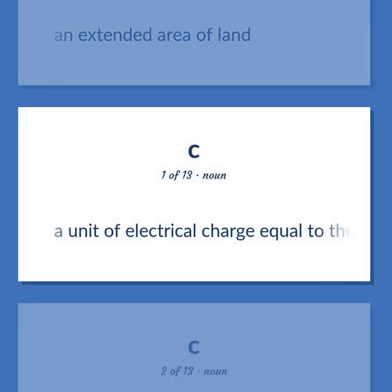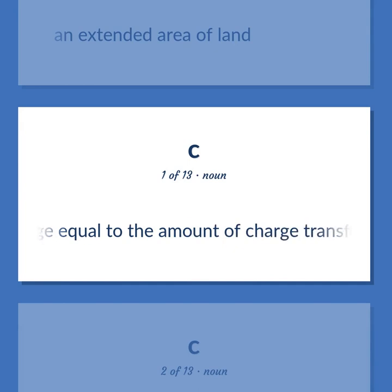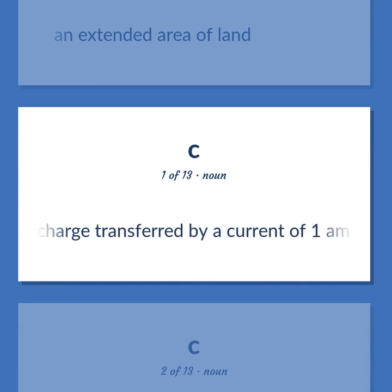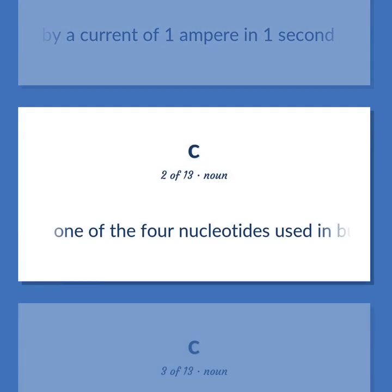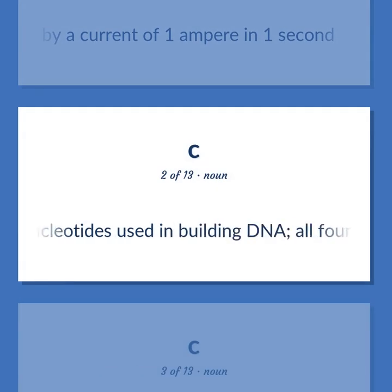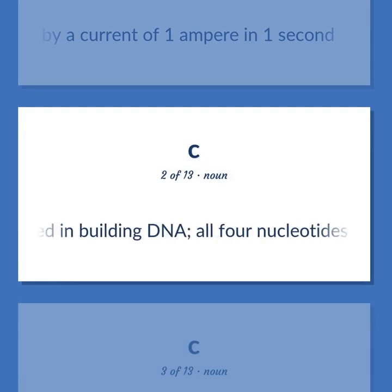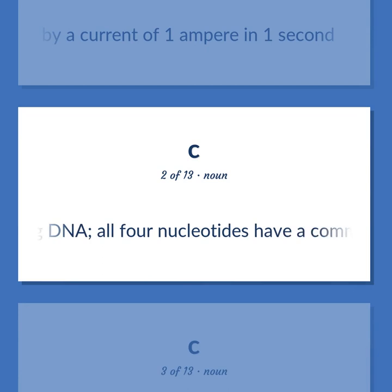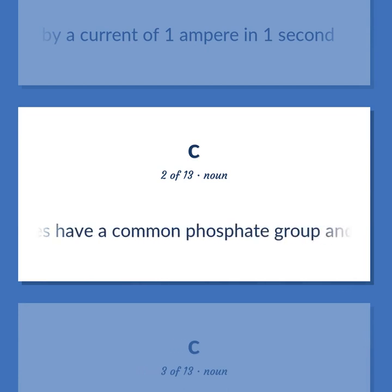C. A unit of electrical charge equal to the amount of charge transferred by a current of 1 ampere in 1 second. One of the four nucleotides used in building DNA. All four nucleotides have a common phosphate group and a sugar, ribose.